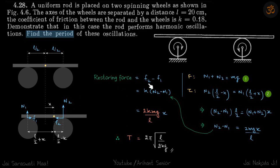The restoring force is f2 minus f1, which equals k times (n2 minus n1). We'll get the value of n2 minus n1 from the force equation and torque equation. For force: n1 plus n2 equals mg. For torque, we are balancing the torque about the center of mass point. The rod will only move in this line; it's not rotating, so net torque on the rod must be zero about this point.